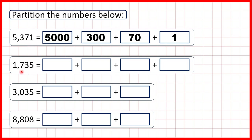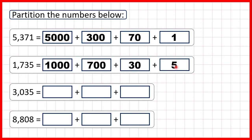So now let's do the same for 1,735. This 1 is in our thousands, so that's 1,000. This 7 is in our hundreds, so that stands for 700. This 3 in our tens stands for 30, and this 5 in our ones stands for 5.